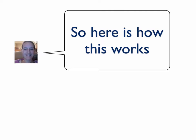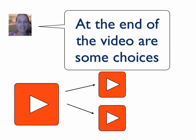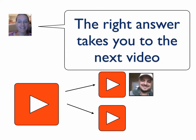For this round, we've done something a little different, so here's how this works. We're going to start with a video, and from that video you're going to get some choices. At the end of the video, there are choices for you to branch to other videos. Leif has started us off, and he's going to give you a couple of options. The right answer is going to take you to the next video.